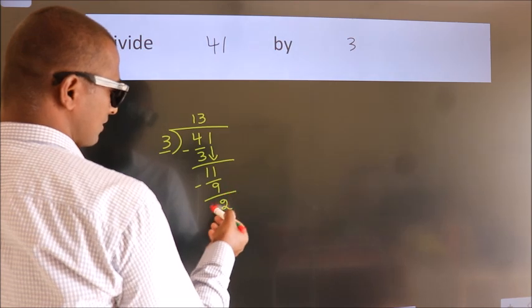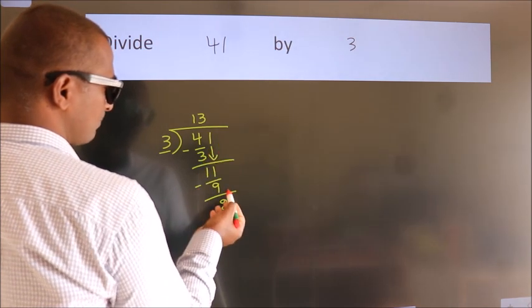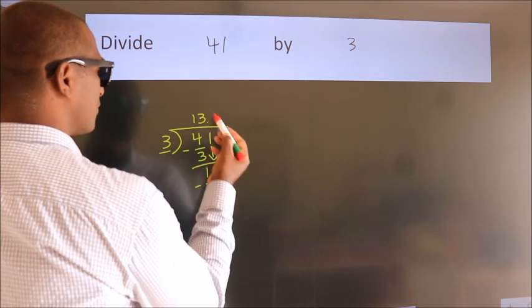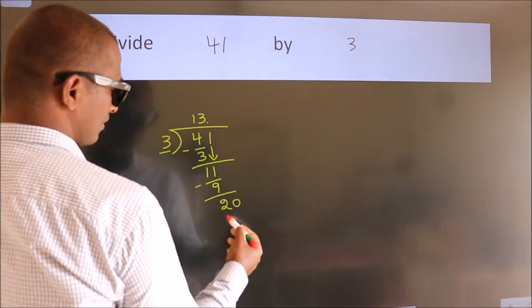After this, no more numbers to bring down. So what we do is put a dot and take 0. So, 20.